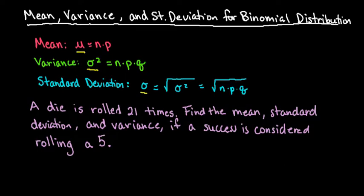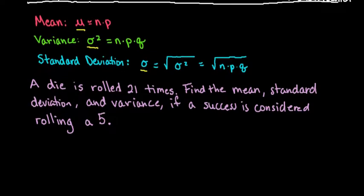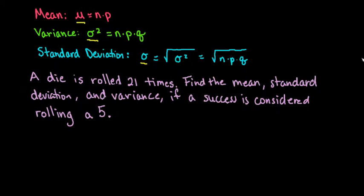So the case that we have here: a die is rolled 21 times. Find the mean, the standard deviation, and the variance, where a success is considered rolling a 5.